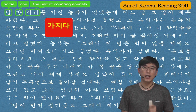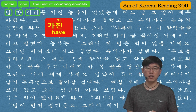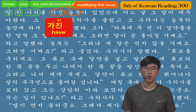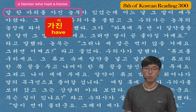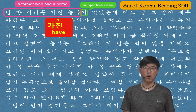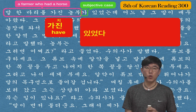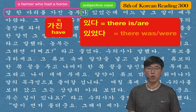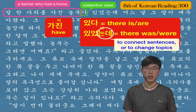가진 came from 가지다, which means to have. The letter 다 is removed and the consonant 니은 is placed under 지 in order to modify the noun behind it: 농부, which means a farmer. So 말 한 마리를 가진 modifies 농부 — a farmer who had a horse. 있었는데 came from 있었다, the past tense of 있다 (there is/are), so 있었다 means there was/were. The letter 다 is replaced with 는데, which connects sentences or changes topics. 어느 날 is one day.